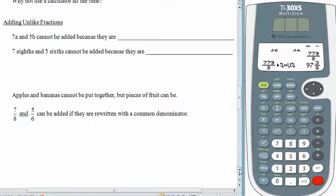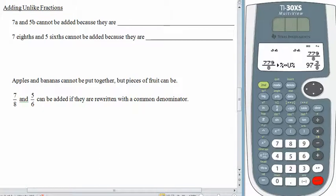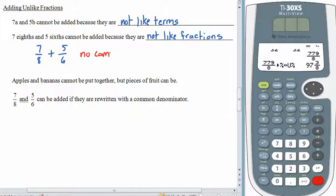As we slide down to talk about unlike fractions, you know that this means that they don't have a common denominator. And, for exactly the same reason that we can't add 7 a's and 5 b's, because they are not like terms. 7 eighths and 5 sixths also can't be added, because they are not like fractions. If we wrote 7 eighths and 5 sixths as fractions, it's pretty easy to see that we don't have a common denominator. 6 is very different from 8.